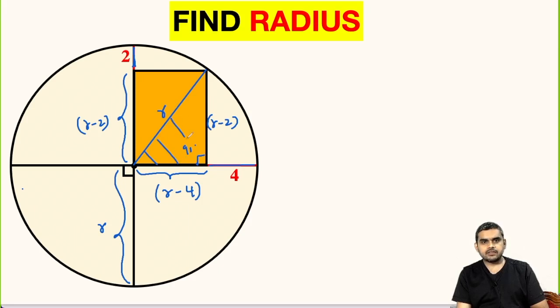If we take this triangle, this is a right angle triangle, so we can apply Pythagorean theorem here. The hypotenuse is r, so hypotenuse squared is equal to r minus 2 whole squared plus r minus 4 whole squared.